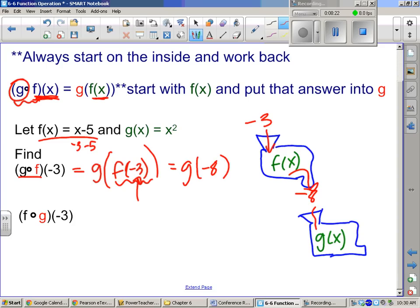Cool. So then it goes through, and all the math happens in there. And this time, g of x is x squared. So we're just doing negative 8 squared. And what's the output from that? Negative 8 squared is 64.